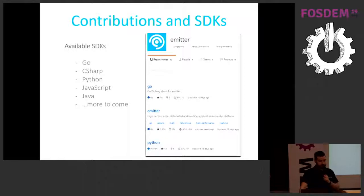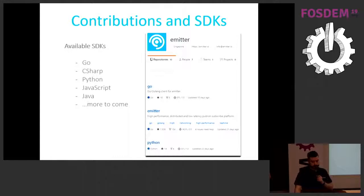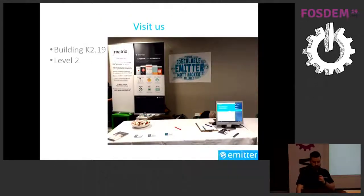We currently have five SDKs: Go, C#, Python, JavaScript, and Java. Some were extensively reviewed by the community, which is very cool. We'd love more SDKs — if you're interested in the project and have a favorite language not listed, visit our website where we describe how to communicate with our server. It's very easy to contribute and we'll be happy to share your SDK.